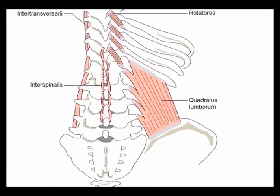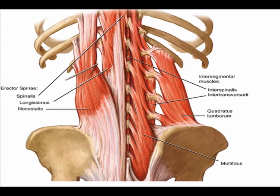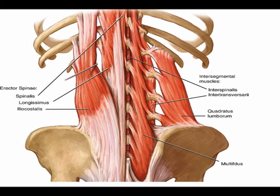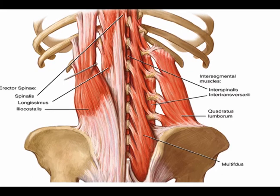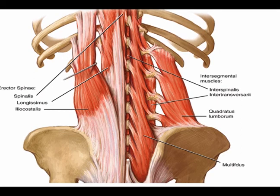The intertransverse serii: the origin is the transverse process, and the insertion is the transverse process of the superior vertebrae. The innervation is the dorsal and ventral rami of the spinal nerves. The action is lateral flexion of the spine and postural stabilization.